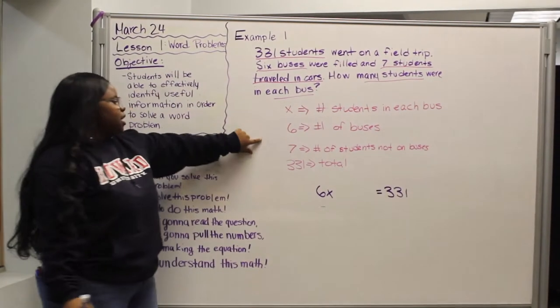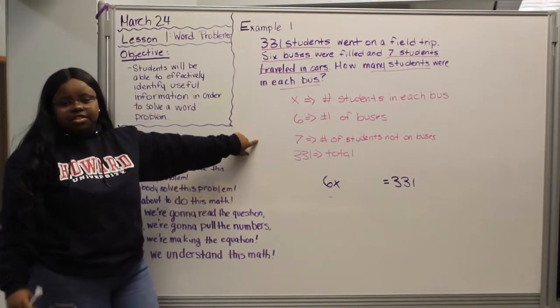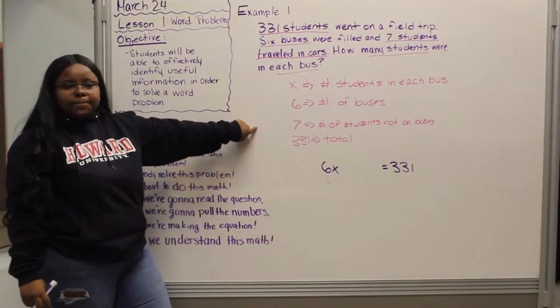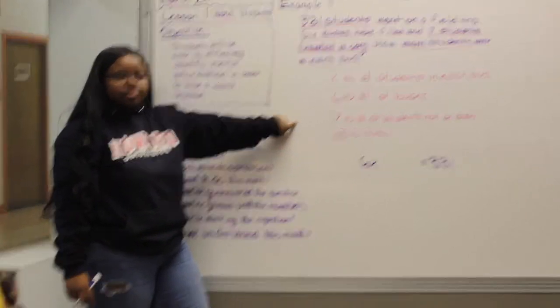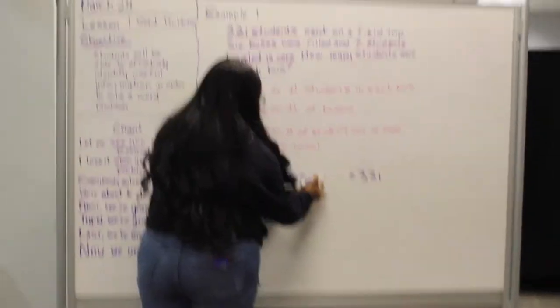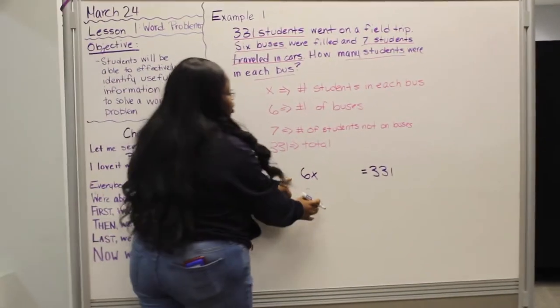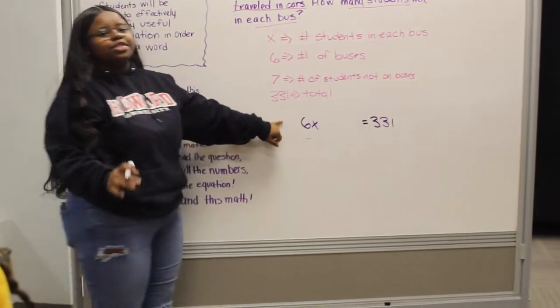And then what, how are we going to incorporate the seven students? Because they're not on the buses. Since they're not on the bus, we would say plus seven. Yes, because when you add seven to the 6x, you're going to get 331 students in total.